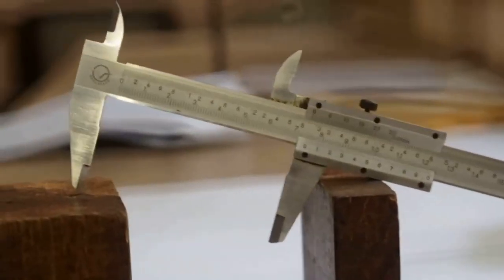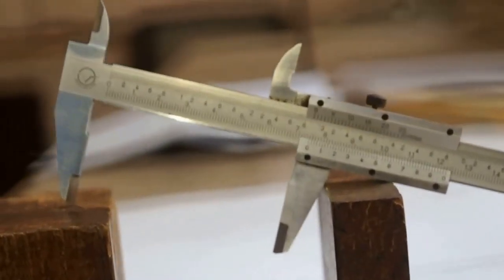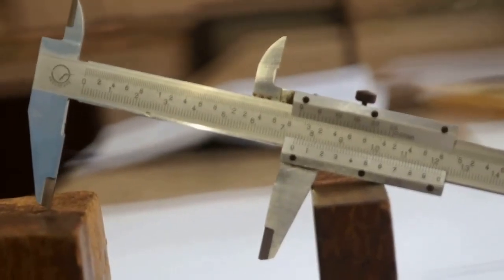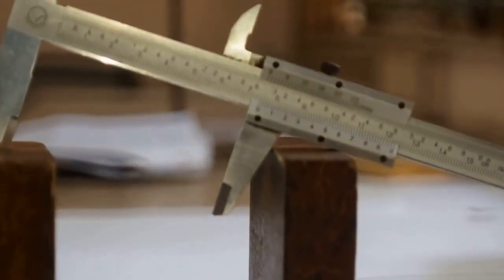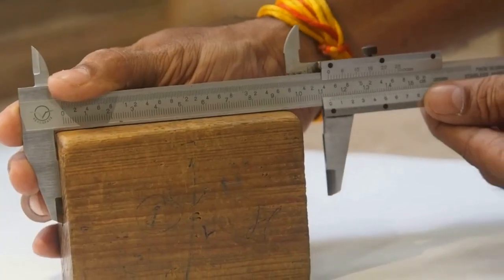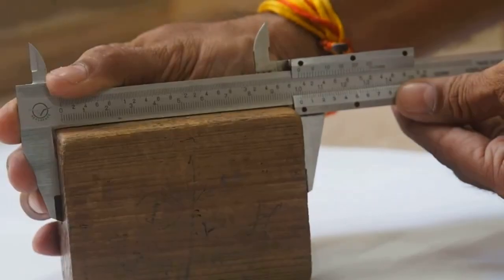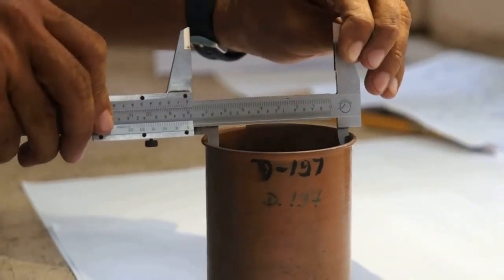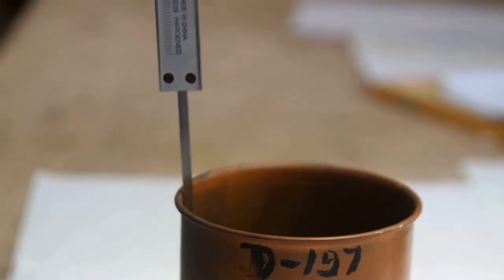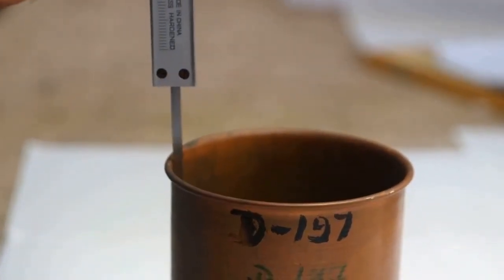The vernier calipers is used for precise measurements of linear dimensions of an object. It is used to measure the outer dimension, inner dimension, and depth of an object.